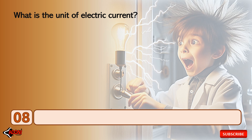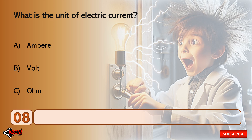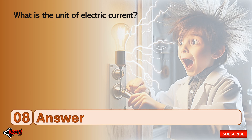What is the unit of electric current? Ampere, volt, or ohm? The answer is ampere.